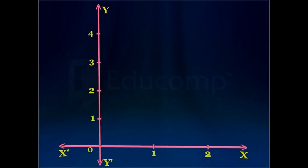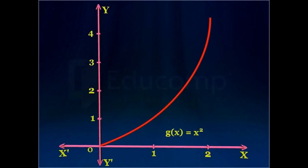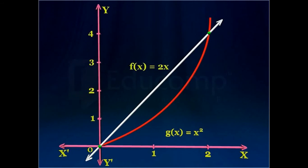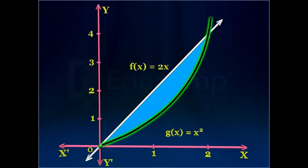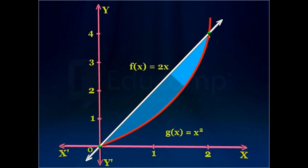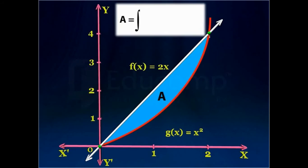Let us look at an example. We are given a graph of a function g of x equal to x square and f of x equal to 2x. We need to find the area enclosed between the two curves. Here we can see that the graph of function g is below the graph of function f, so we can find the area enclosed between them by finding a definite integral from a to b of f of x minus g of x, whole dx.